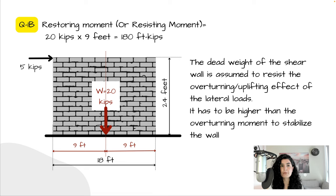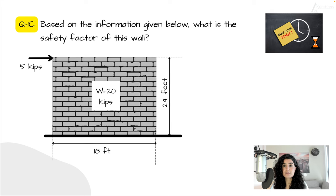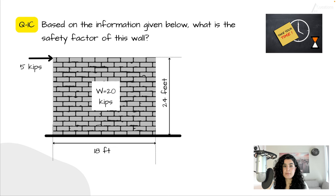We have this difference because of something called the safety factor. Our wall is stronger than the overturning moment of 120 foot-kips. Let's continue to Question 1c: based on the information given below, what is the safety factor of this wall? Now that we know both the overturning moment and the restoring moment, it's straightforward to find the ratio between the two and determine the safety factor.